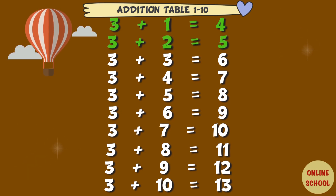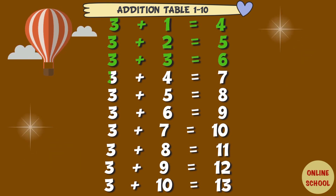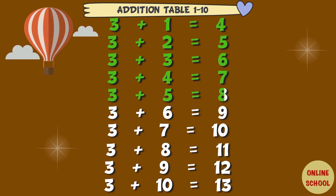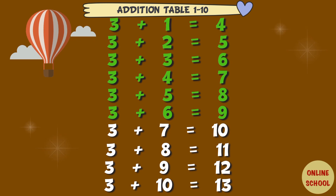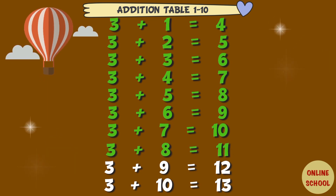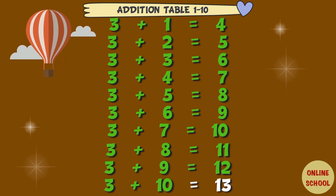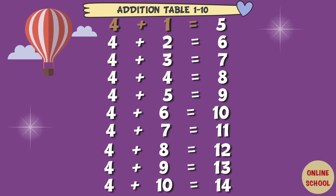3 plus 2 equal 5, 3 plus 3 equal 6, 3 plus 4 equal 7, 3 plus 5 equal 8, 3 plus 6 equal 9, 3 plus 7 equal 10, 3 plus 8 equal 11, 3 plus 9 equal 12, 3 plus 10 equal 13. Table 4: 4 plus 1 equal 5.